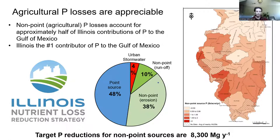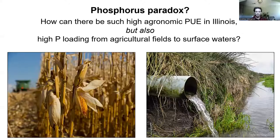Non-point sources are roughly half of what we're losing to our rivers — and we are the number one contributor of phosphorus to the Mississippi River basin. Because you can quantify point sources with an actual pipe, you get a good number on that, and by difference you assume the remainder is non-point source. But it gets tricky to equate non-point source as synonymous with agriculture, because there can be other non-ag sources like stream bank erosion — not directly from field erosion or field-applied fertilizer.